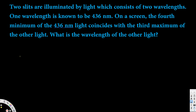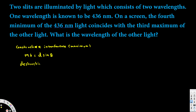Let's look at the conditions. A maximum corresponds to constructive interference. For constructive interference, the condition is m·λ = d·sinθ. For destructive interference — that is, minimum — the condition is (m + ½)·λ = d·sinθ.